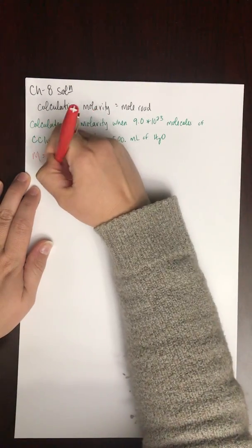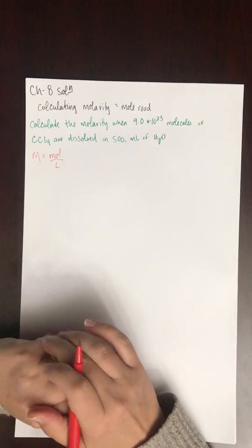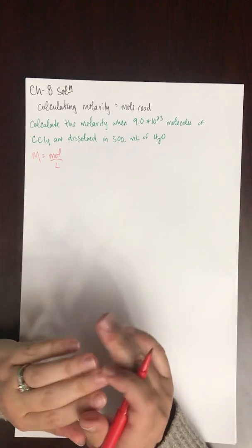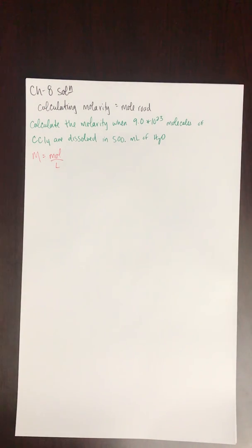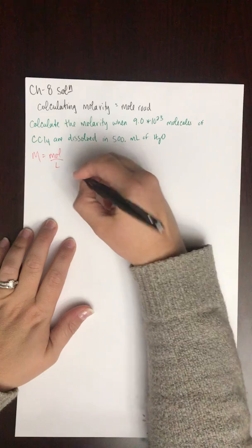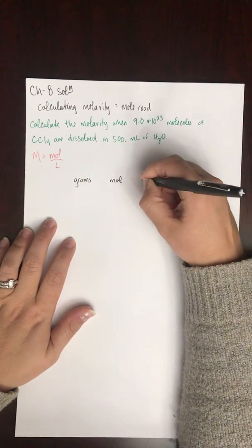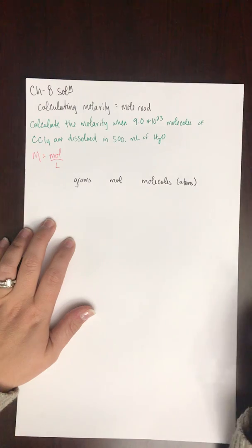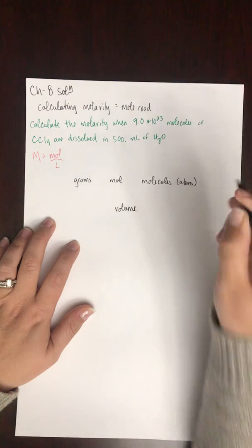We're trying to solve for molarity, and molarity is moles per liter. That means I need the number of moles and I need the volume in liters. I'm given molecules and volume in milliliters, so we need to convert each separately. Let's start by converting molecules of CCl₄ to moles using the mole road.